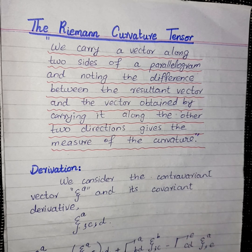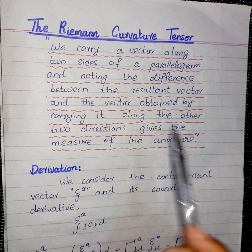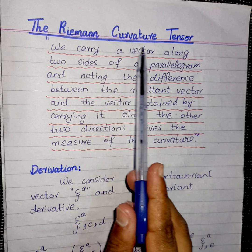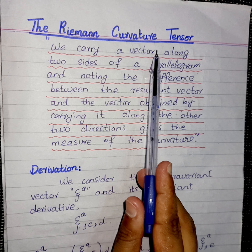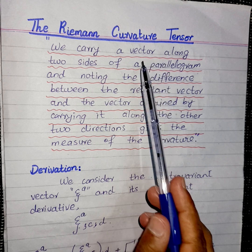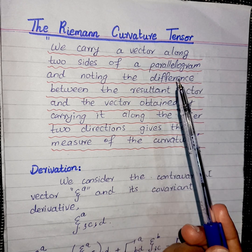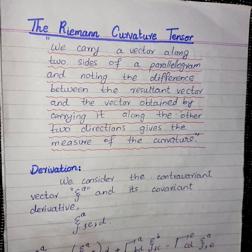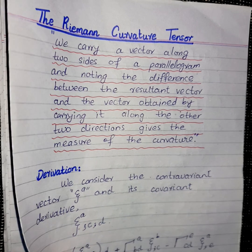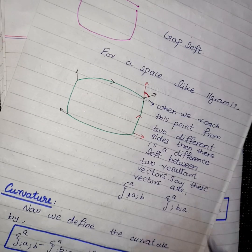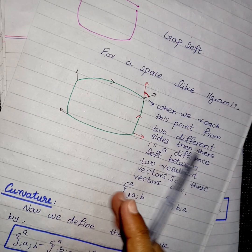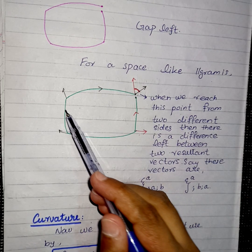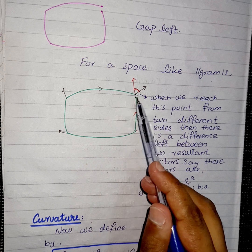Hello everyone. In today's lecture we will discuss the derivation of the Riemann curvature tensor. In the previous lecture we discussed the curvature of a manifold, where we took an example of a parallelogram drawn in a space of positive curvature.